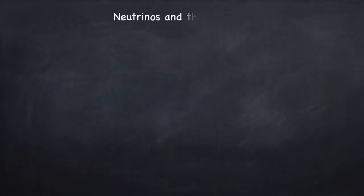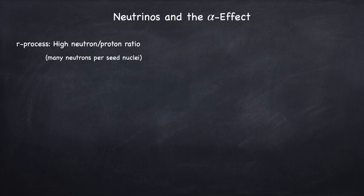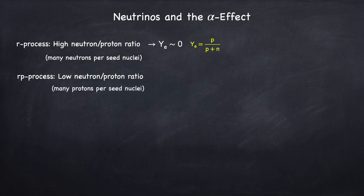What happens if you include neutrinos? We need to remind ourselves what we need for the R process: neutron-rich environments, so a high neutron to proton ratio, meaning a lot of neutrons per seed nuclei. Another way to put this is that we need the quantity YE to be very small. YE is the number of protons divided by the total number of nucleons. For the RP process we need the exact opposite — a YE close to 1. Now in a supernova, YE is low, but not super low. Initially when we ran simulations this wasn't a problem — you could still make everything up to uranium. Then we added neutrinos.